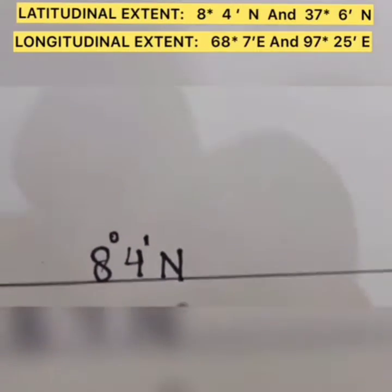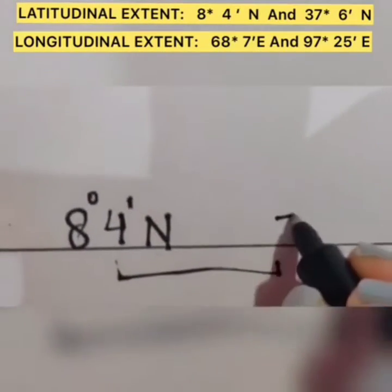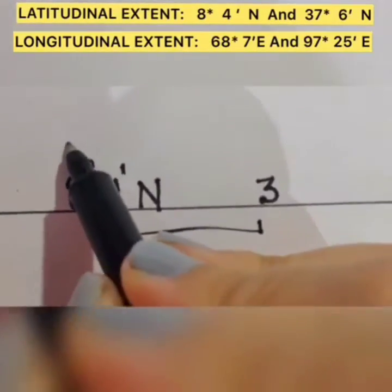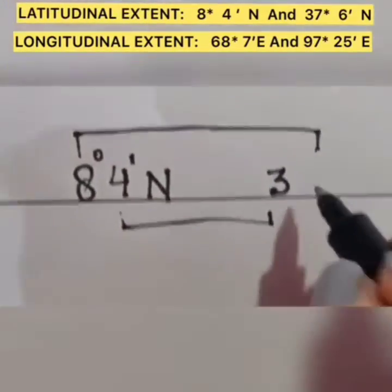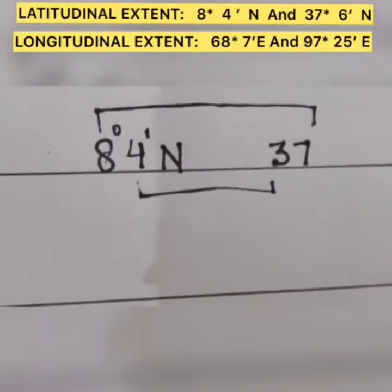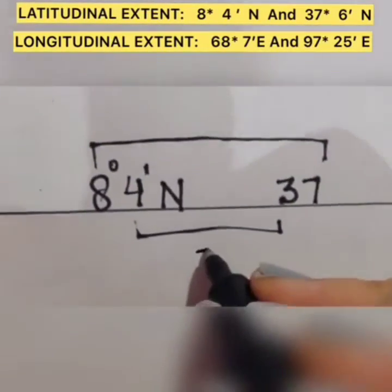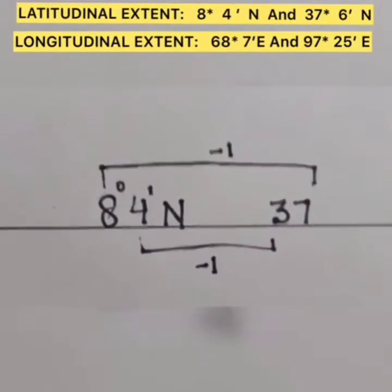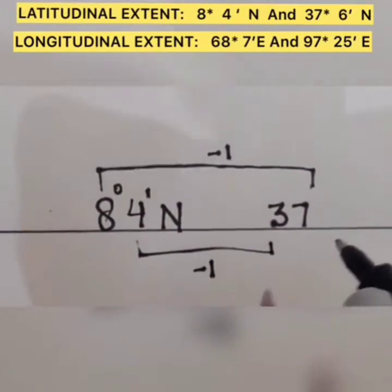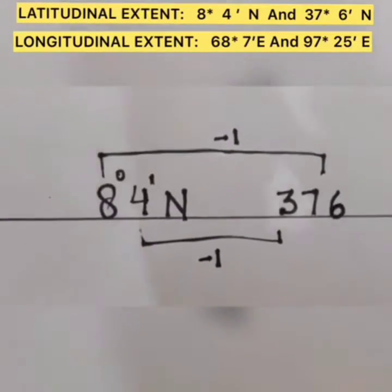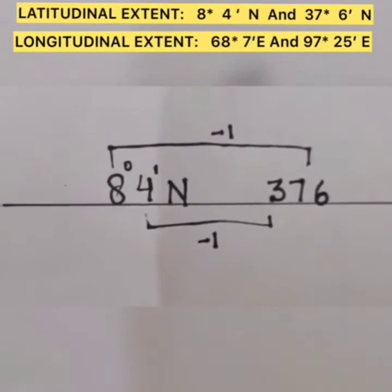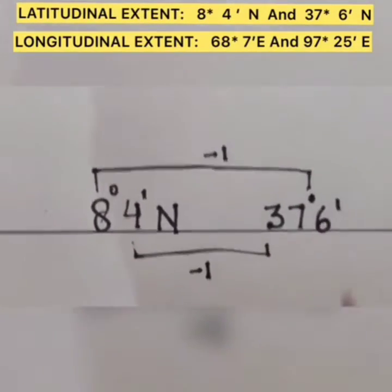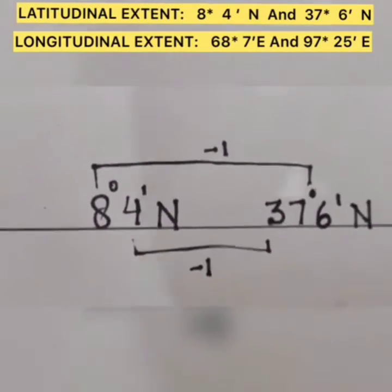Furthermore when I subtract 1 from 4 I get 3. On the other hand, subtracting 1 from 8 I get 7. So I have subtracted 1 here and 1 here. In turn, the last digit, subtracting 1 from it I get 6. So the northernmost latitude stands to be 37 degree 6 minutes north.